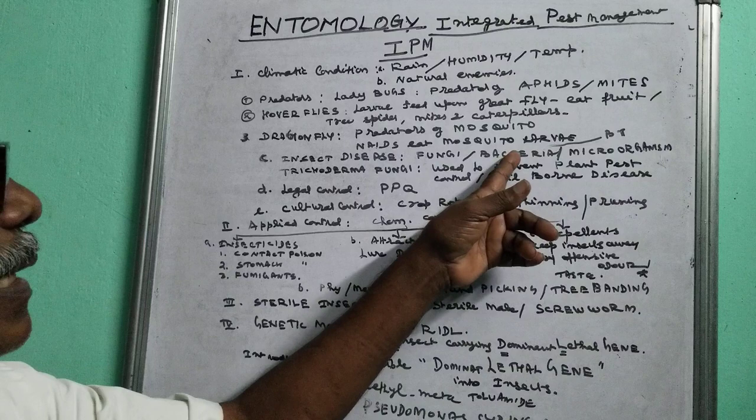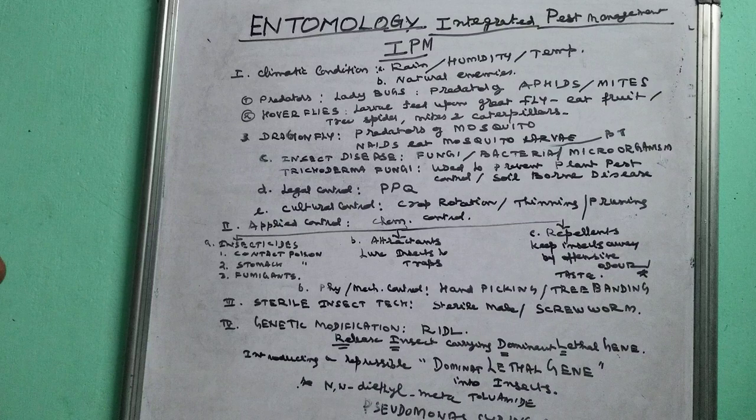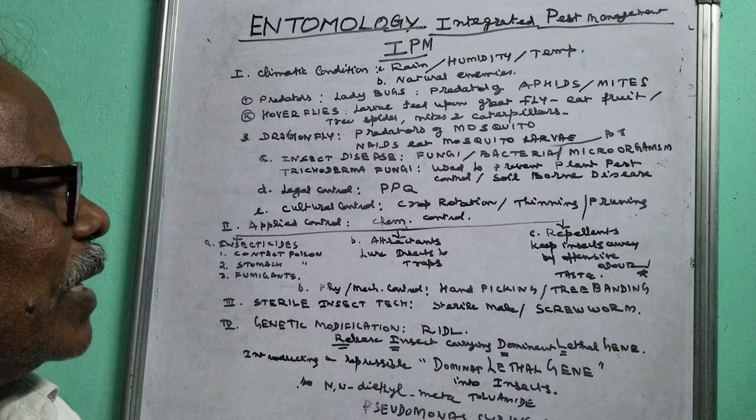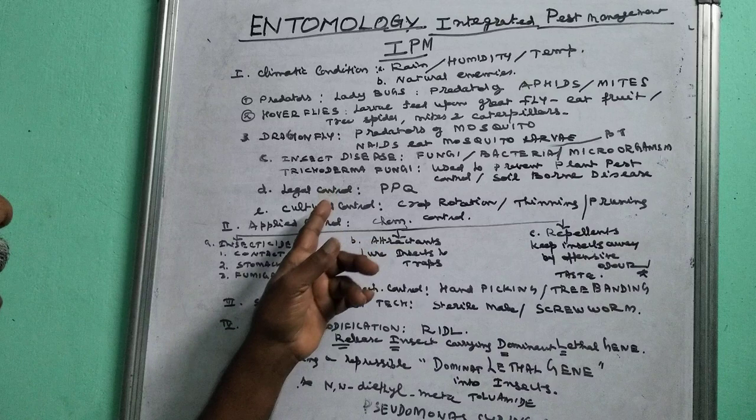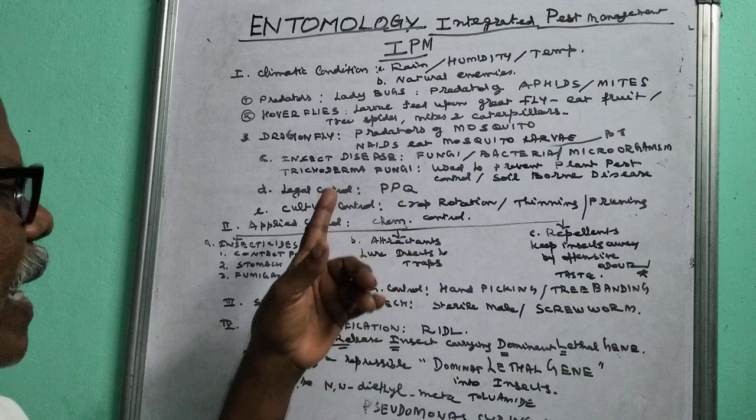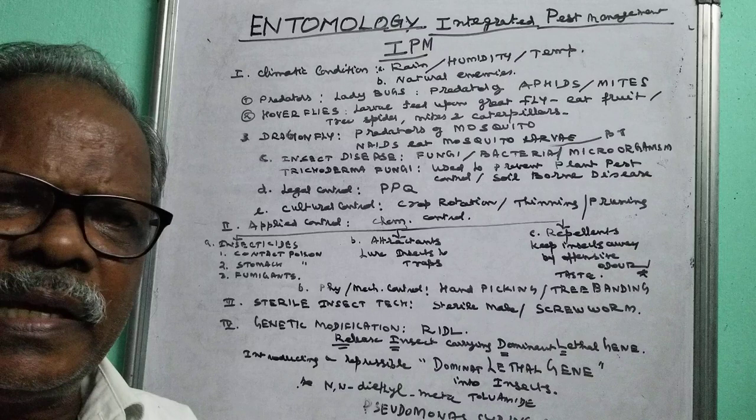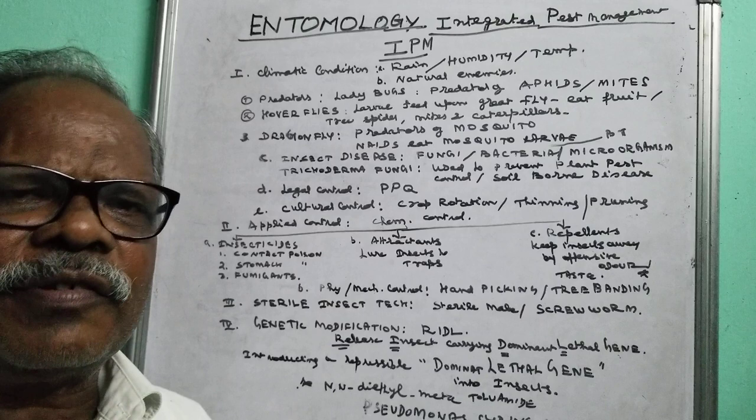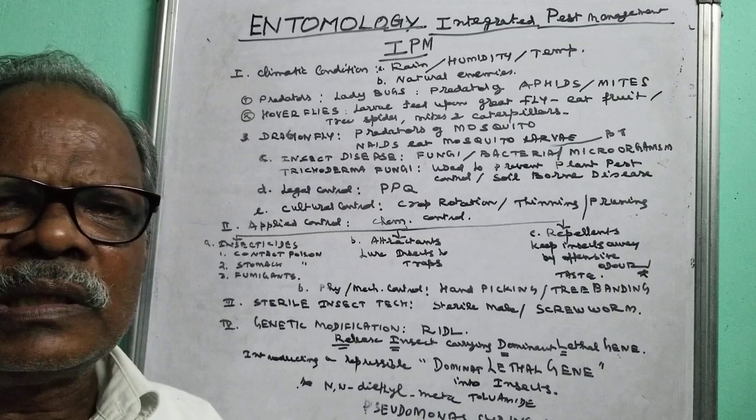That is called the introduction of bacteria in the plant. Also, the microorganism Pseudomonas syringae also controls insects. Legal control — plant quarantine — we have already seen. Cultural control is also there. When we do not change the crop, insect activity will be more. So once in a season we have to rotate the crop.